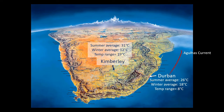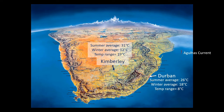Kimberley, on the other hand, is 620 kilometers inland from Durban and has no ocean anywhere near it to moderate its temperatures. As a result, its summer averages are much higher than Durban's at 31 degrees, and its winters are much colder than Durban's at 12 degrees. The key here is to look at the seasonal temperature ranges.